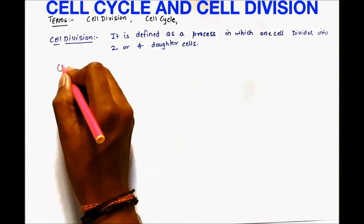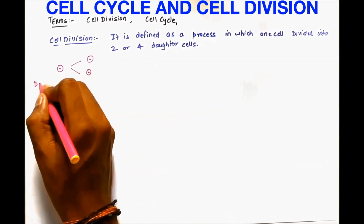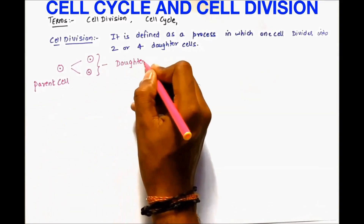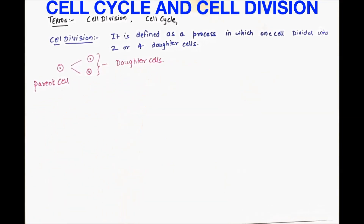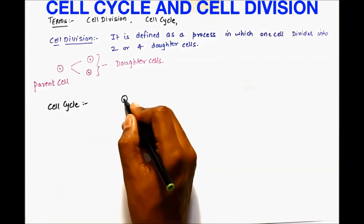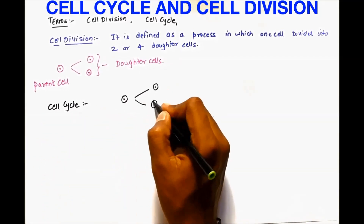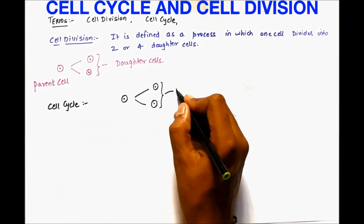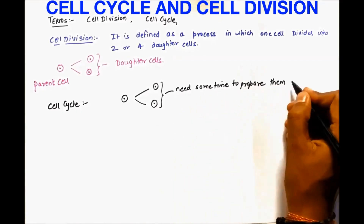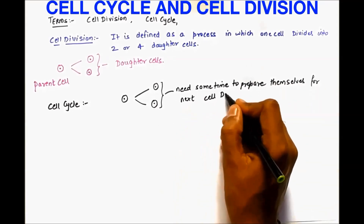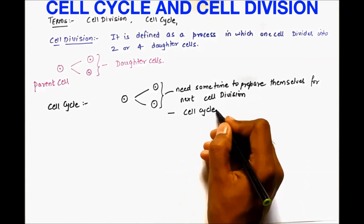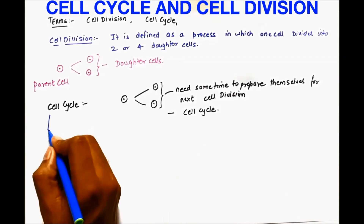It means one cell divides into 2 cells. The one which divides is the parent cell, and the ones formed are daughter cells. In the cell cycle, one cell divides into 2, but the daughter cells need some time to prepare themselves for the next cell division, and this time we call it the cell cycle.